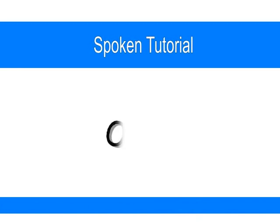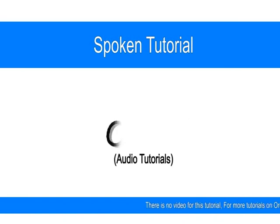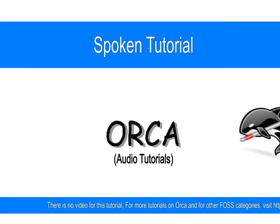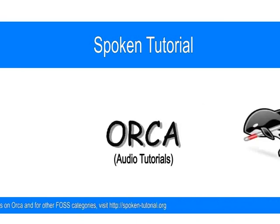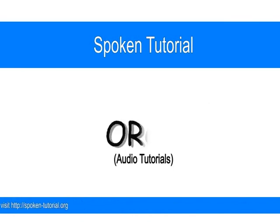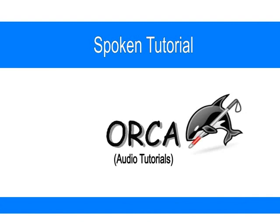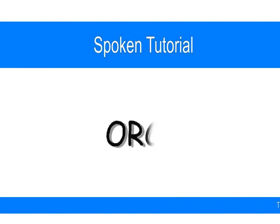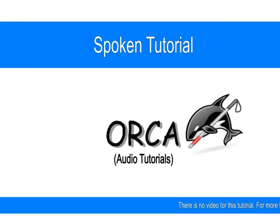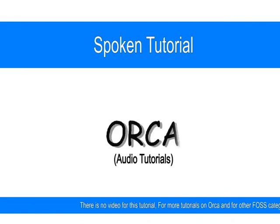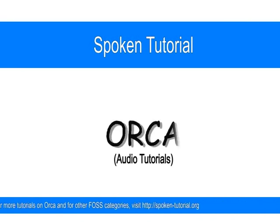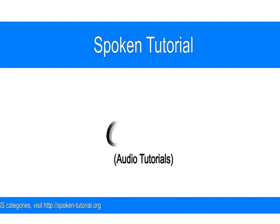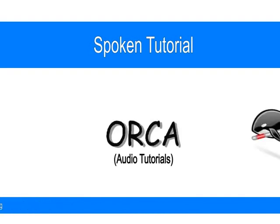Let's press Ctrl plus Home to go to the top of the file. Orca reads the first line: 'I use Ubuntu GNU slash Linux.' Let's read the entire document line by line. Keep pressing the down arrow to go through every line. Orca reads: 'Orca will in the system by default.' Then: 'Orca will in the screen reading software.' You can go back up using the up arrow.